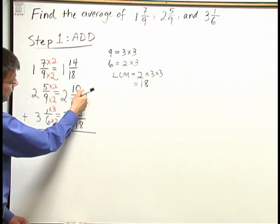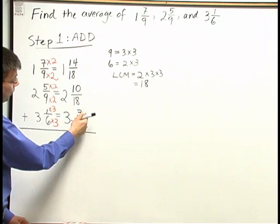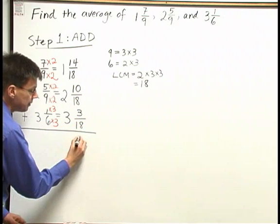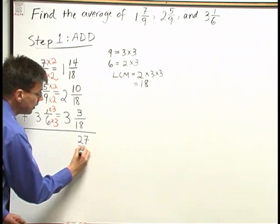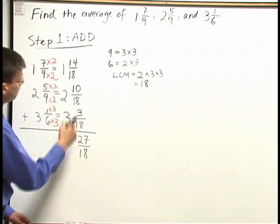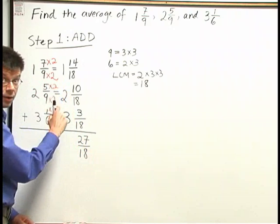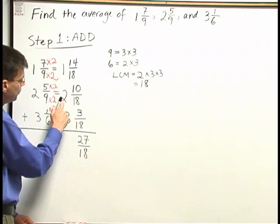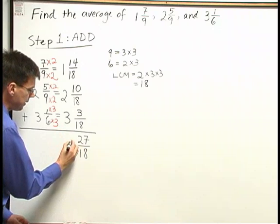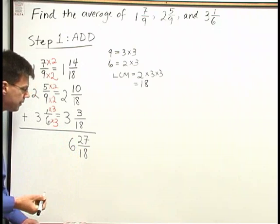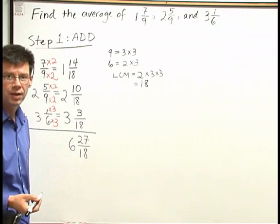Fourteen plus ten is twenty-four, plus three more is twenty-seven. I have twenty-seven eighteenths. The whole number parts, I also add together. One plus two is three, plus three is six. So my sum is six and twenty-seven eighteenths.